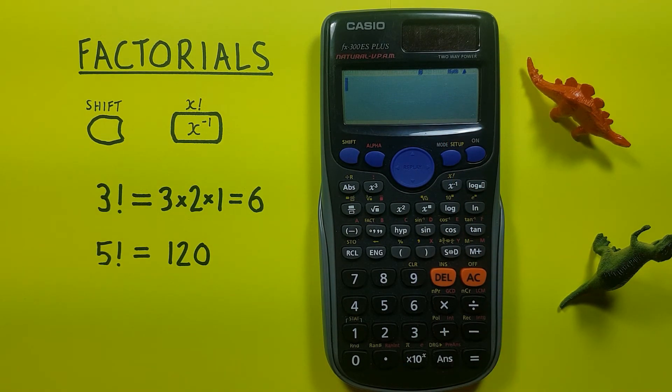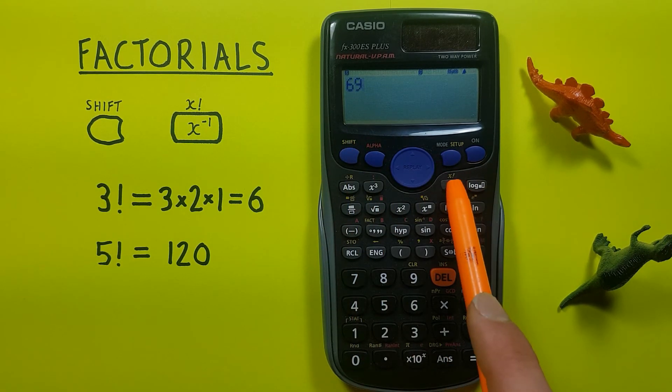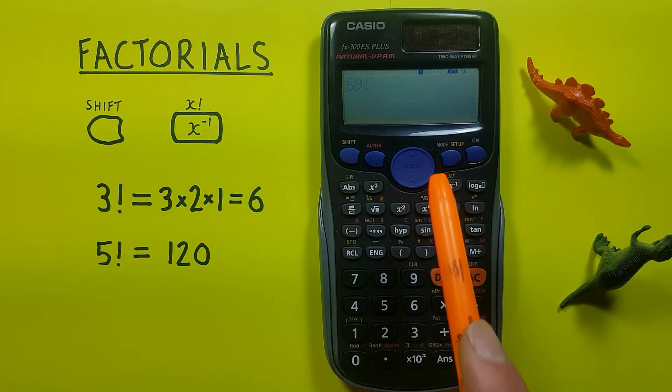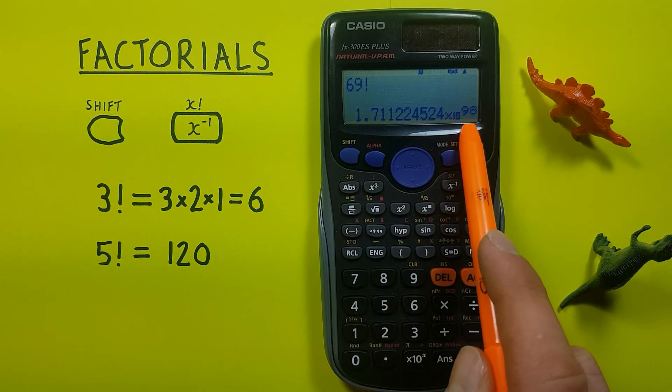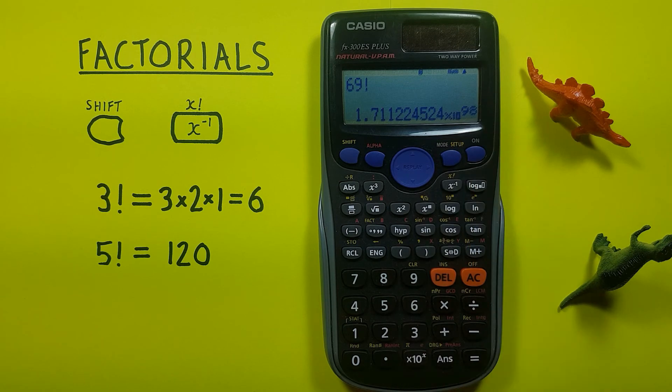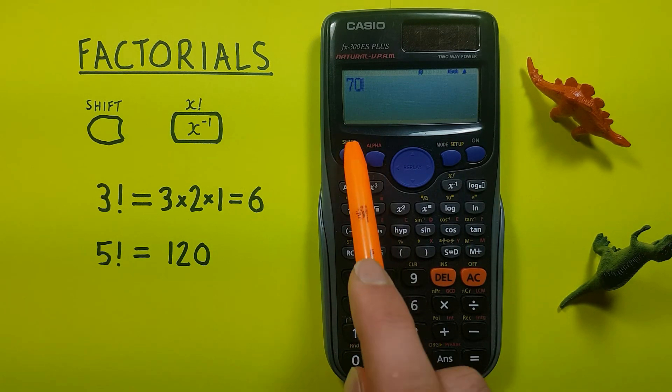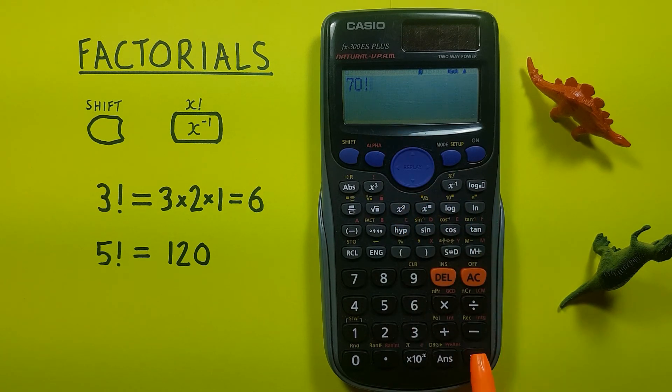The largest number this can handle is 69 factorial, which will give us a result which you can tell is huge, times 10 to the power of 98, while 70 factorial takes us right back to that error screen.